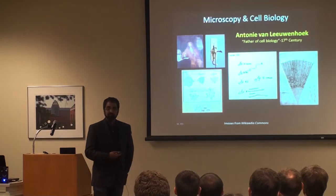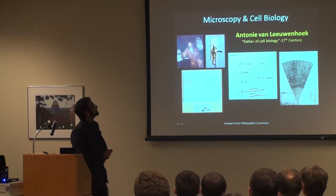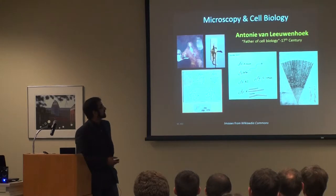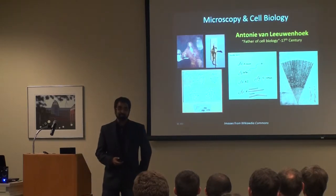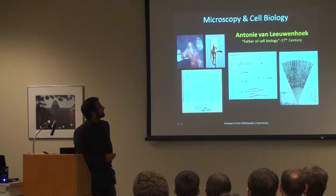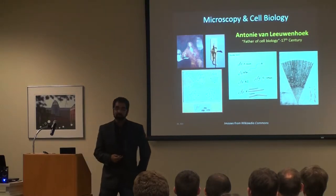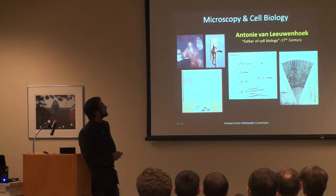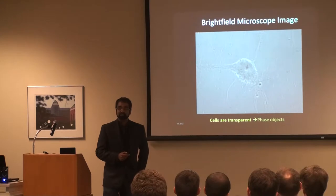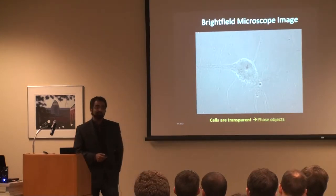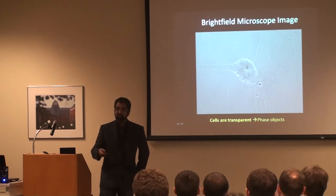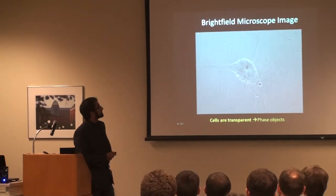I'd like to start at the very beginning to put this into context - at the beginning of microscopy and cell biology in the 17th century, when Anton van Leeuwenhoek used the earliest bright field microscopes to first observe living cells and other microorganisms. These two fields have evolved together over the past few centuries. But the problem with imaging living cells since the beginning is that they're really thin, really small, transparent objects. If you just shine light through them, they absorb very little light, so you don't get much contrast in your image.